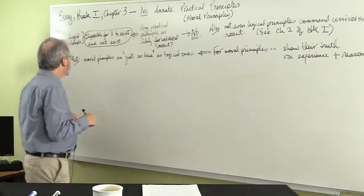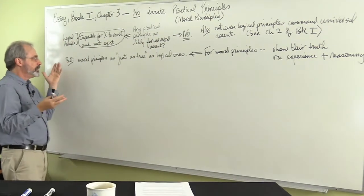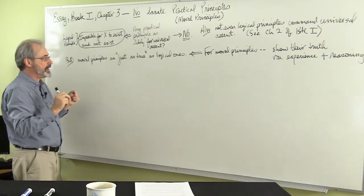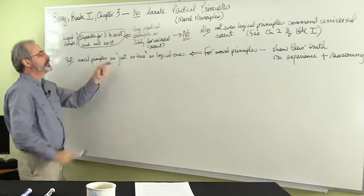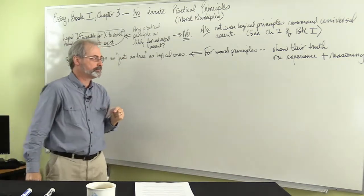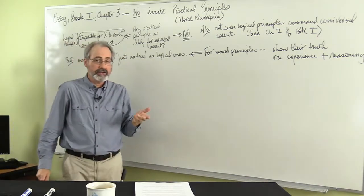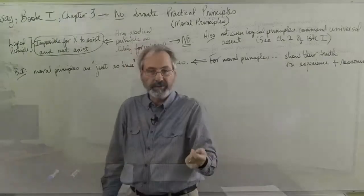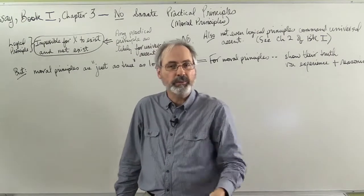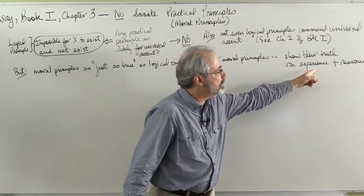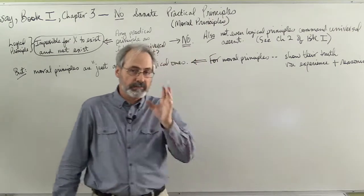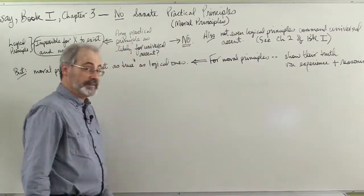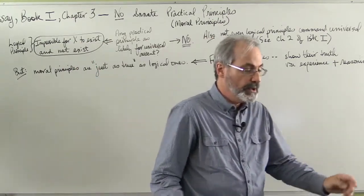So, Locke says, however, just because they're further away from commanding ascent or universal ascent, moral principles are just as true as logical ones. So it doesn't mean that they're less likely to be true or anything like that. It's just that moral principles, more than logical principles, need to be grounded on experience and reason. Locke doesn't think that logical principles are going to be grounded like that. But still, you're not born knowing logical principles.